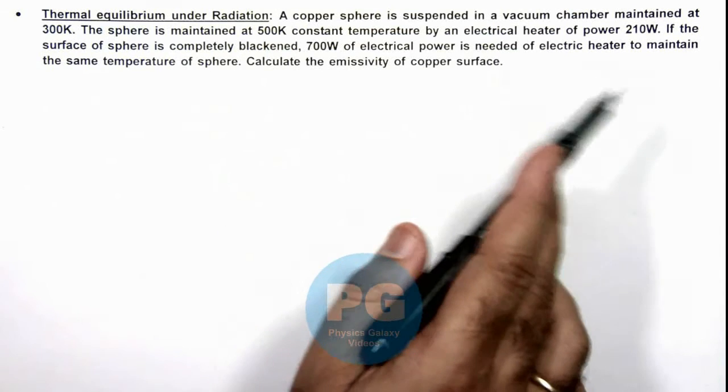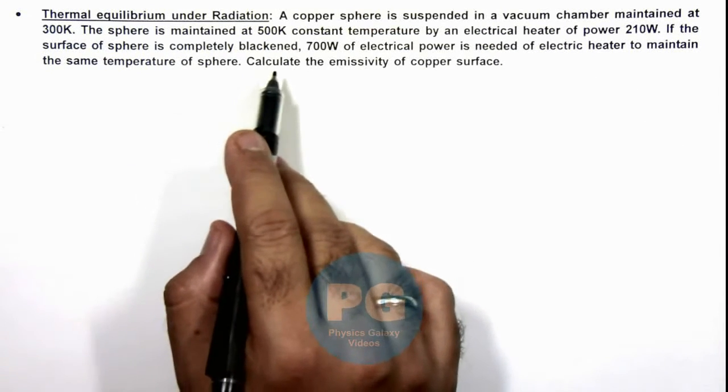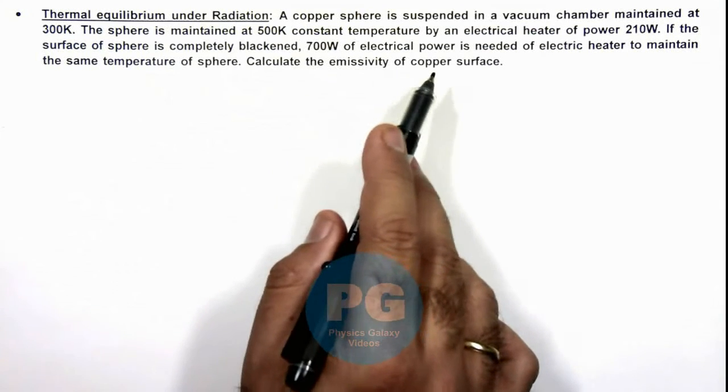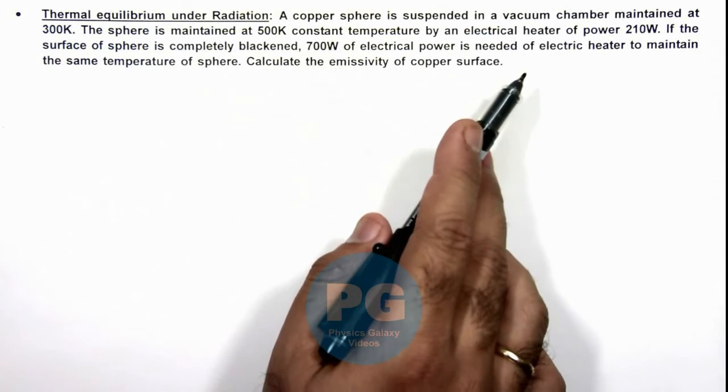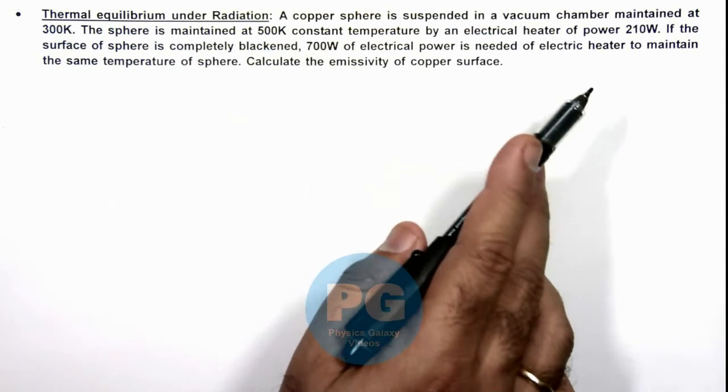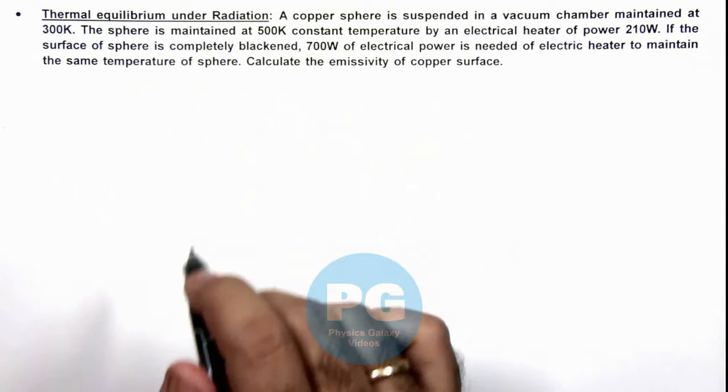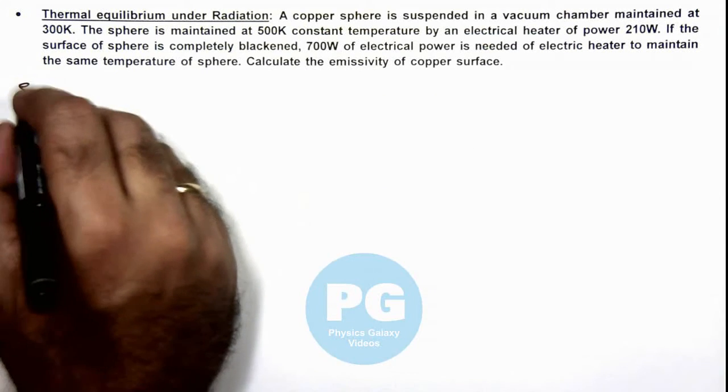Here, it is saying if the surface of sphere is completely blackened, 700 watts of electrical power is needed of electric heater to maintain the same temperature of sphere. We are required to calculate the emissivity of copper surface.